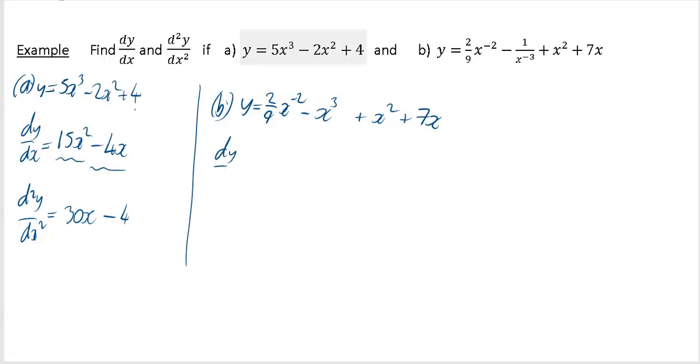First, we differentiate. You're going to have -2 times 2/9, which is -4/9. That's x to the power reduced by 1, so x^(-3). Then 3 multiplies to give x², plus 2x plus 7. That's dy/dx.